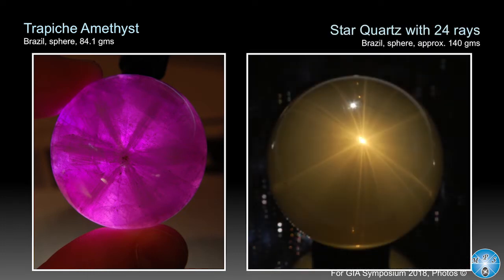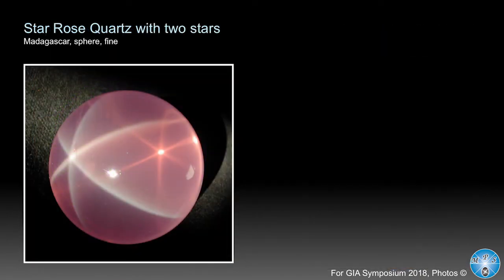A 24-ray star — you can try to count them, it's not easy. This is a star quartz sphere, and in transmitted light you can see 24 rays, or maybe 18, 19, or 20. And star rose quartz can show two stars: one star from reflection of inclusions near the surface of the sphere, and a second star from reflection of needles at the lower part of the sphere — that's why you have two stars.